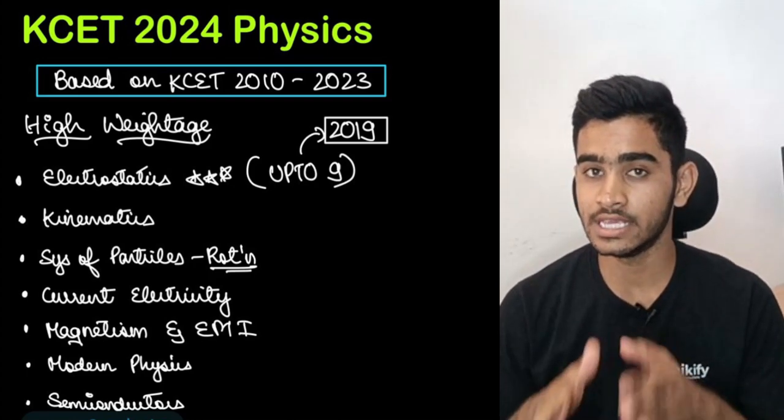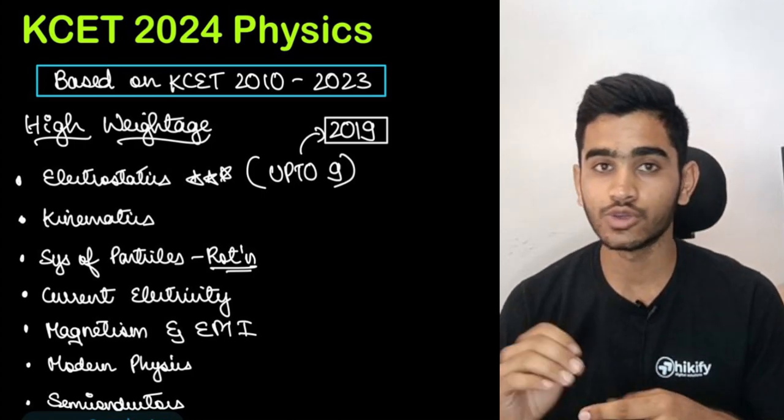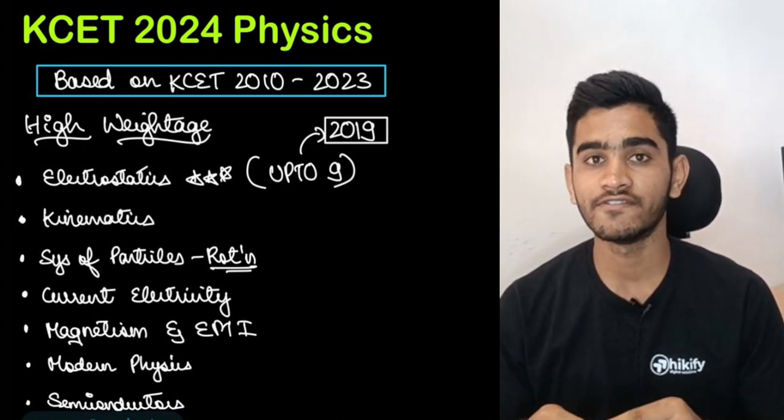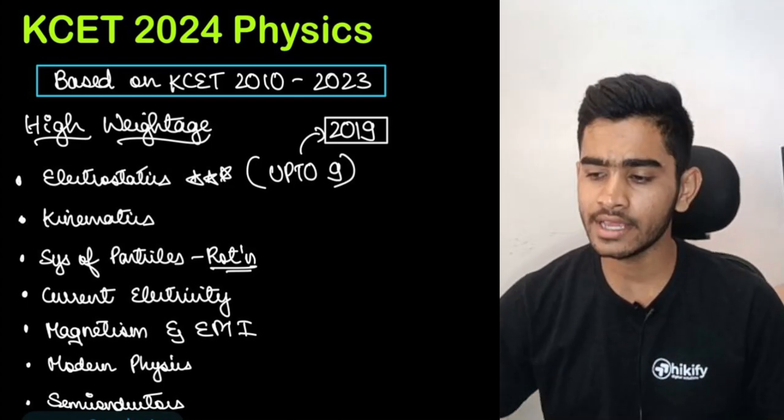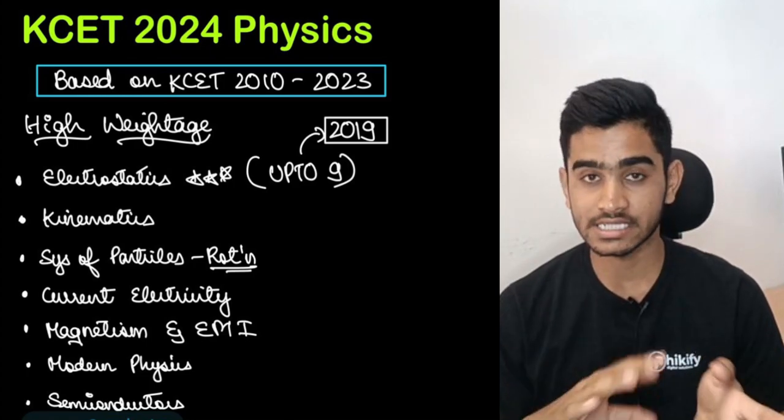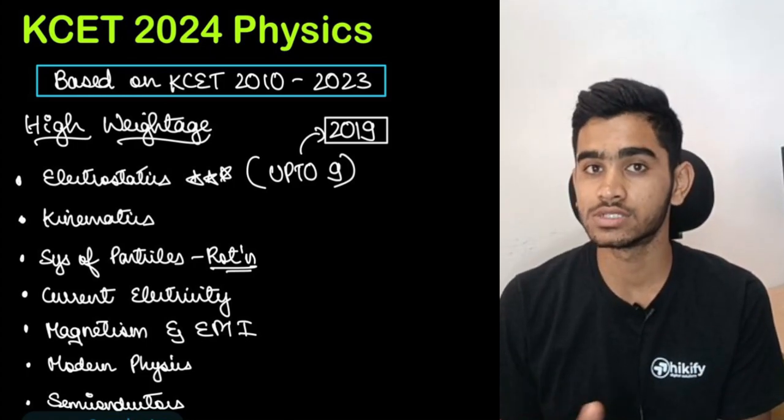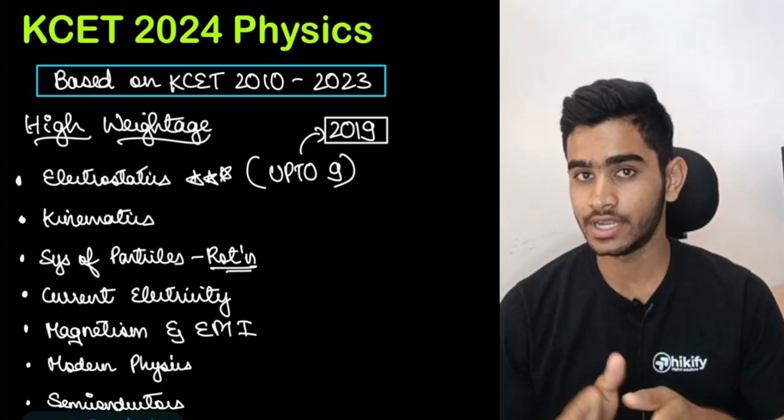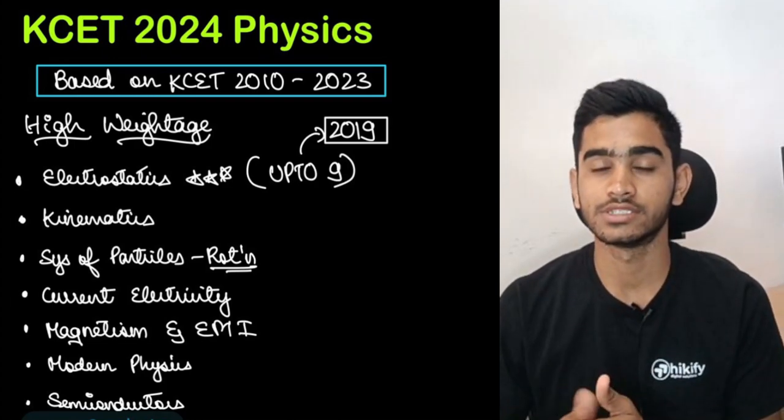So this is an easy unit to tackle and I am sure you people will keep this in mind while you are preparing modern physics in order to give an extra focus for it. And in the end when we are summing up the high weightage chapters, semiconductors enters this high weightage block because around 4 to 5 questions are being asked continuously when it comes to your semiconductors electronics unit.